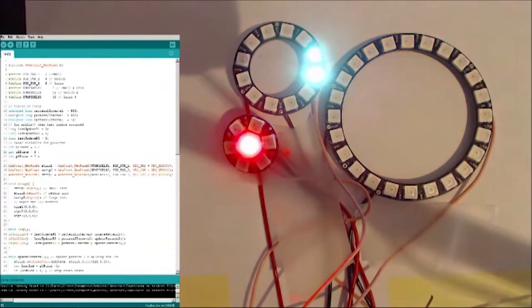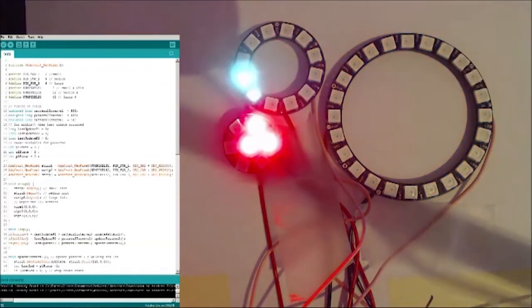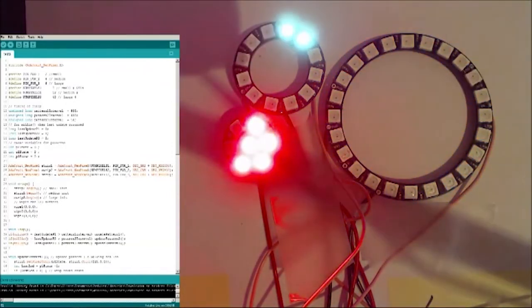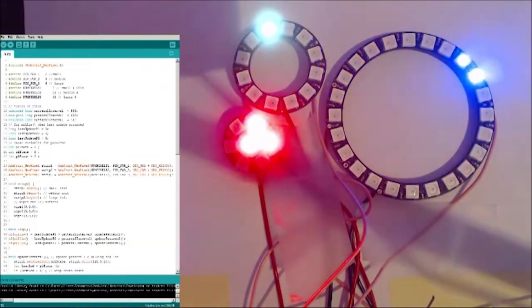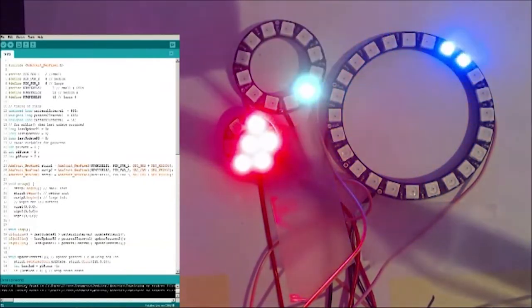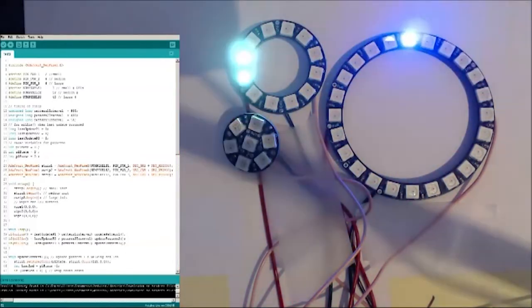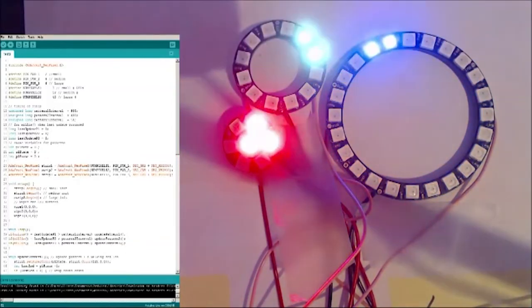So you can see in the Arduino code and from the LEDs, the large string or large wheel is going a lot quicker than the middle ring, and also the smaller ring. And the smaller ring is adding up the LEDs and lighting them one at a time.